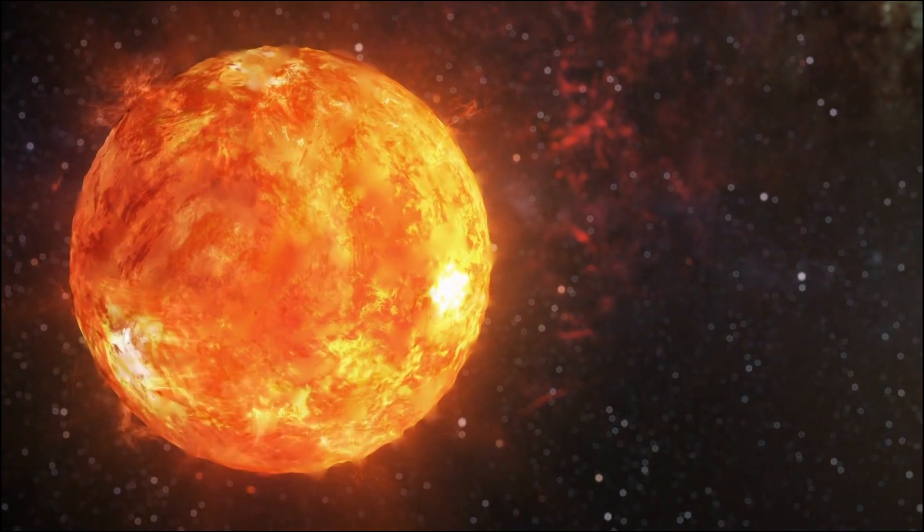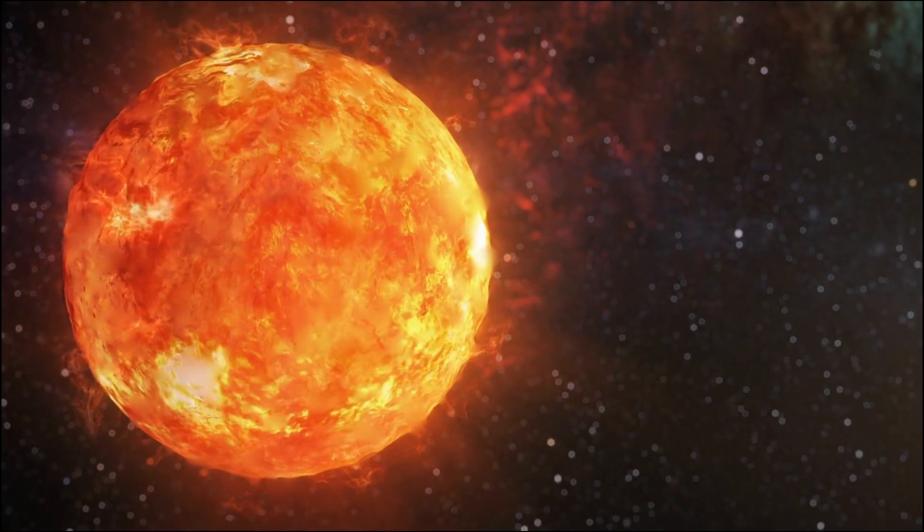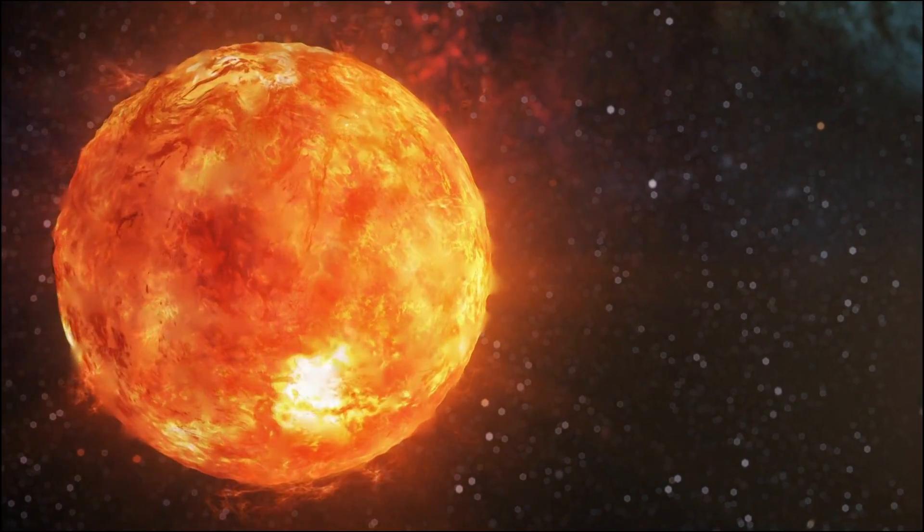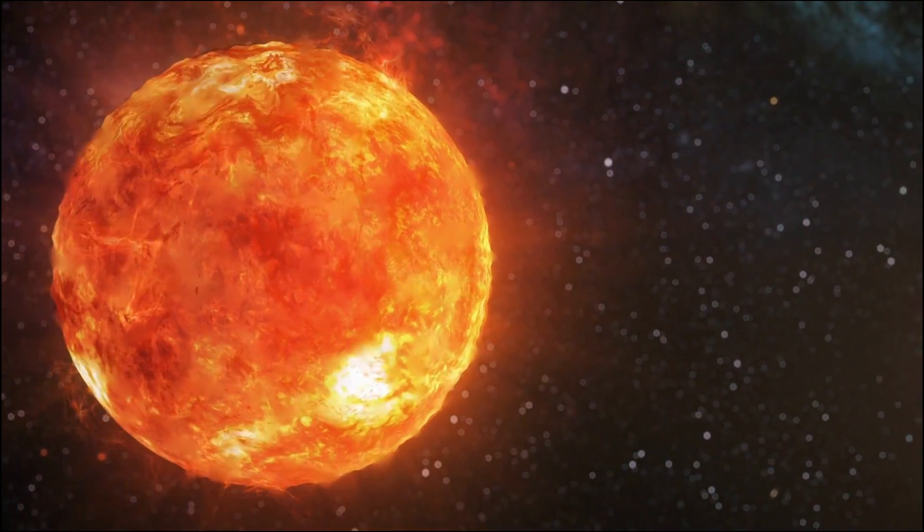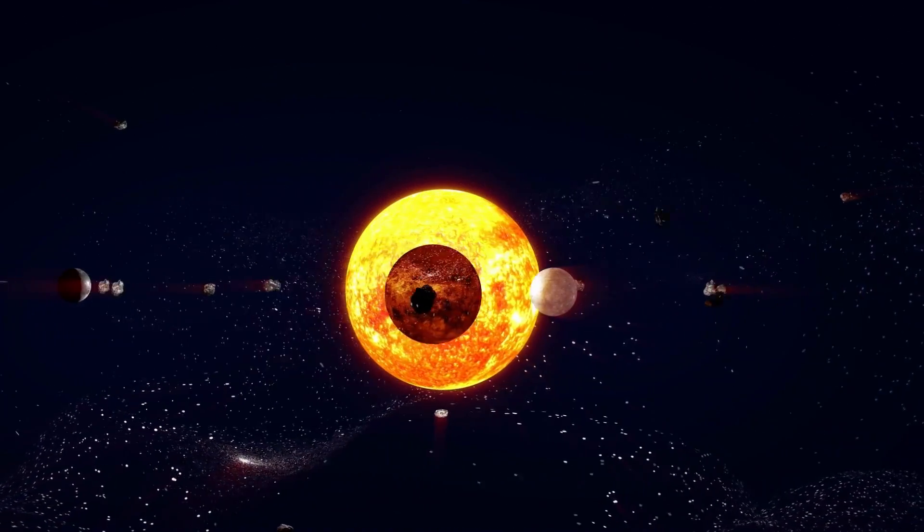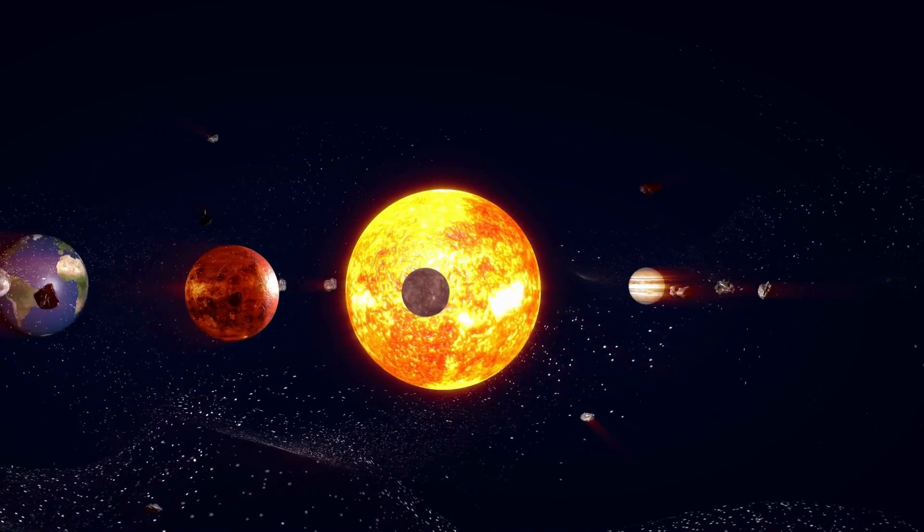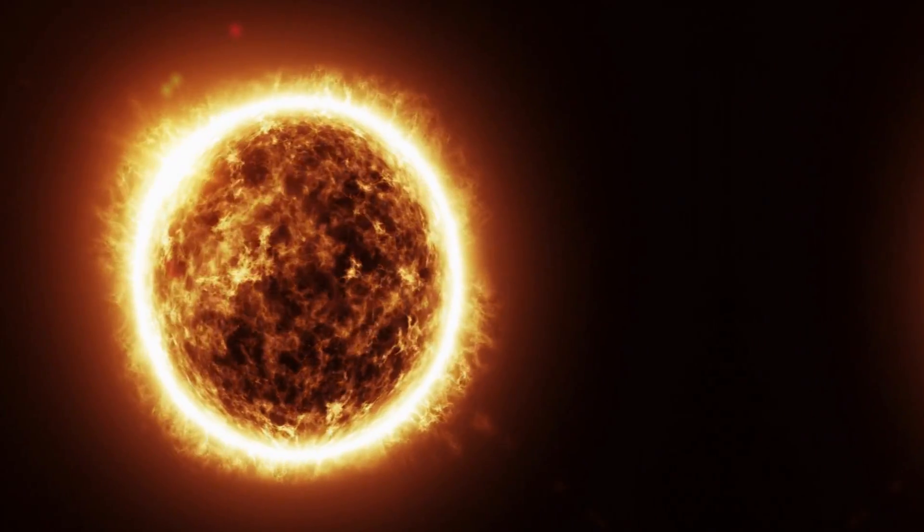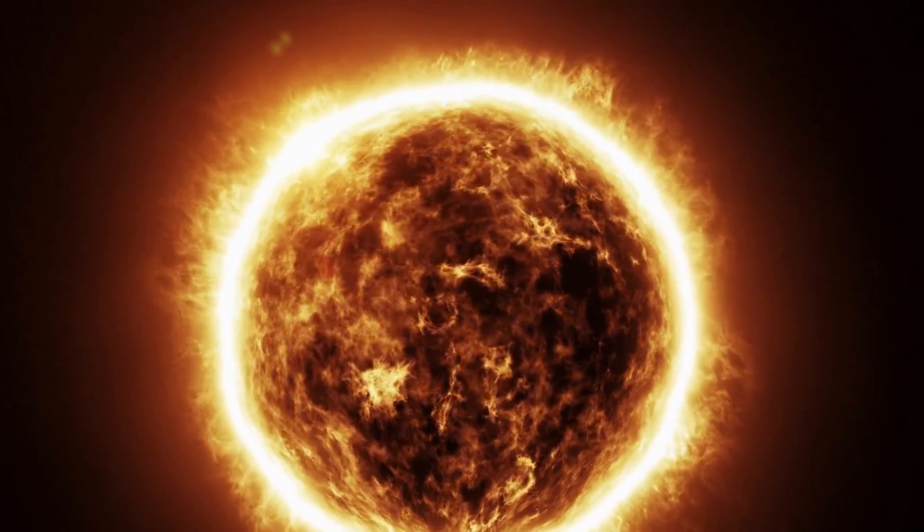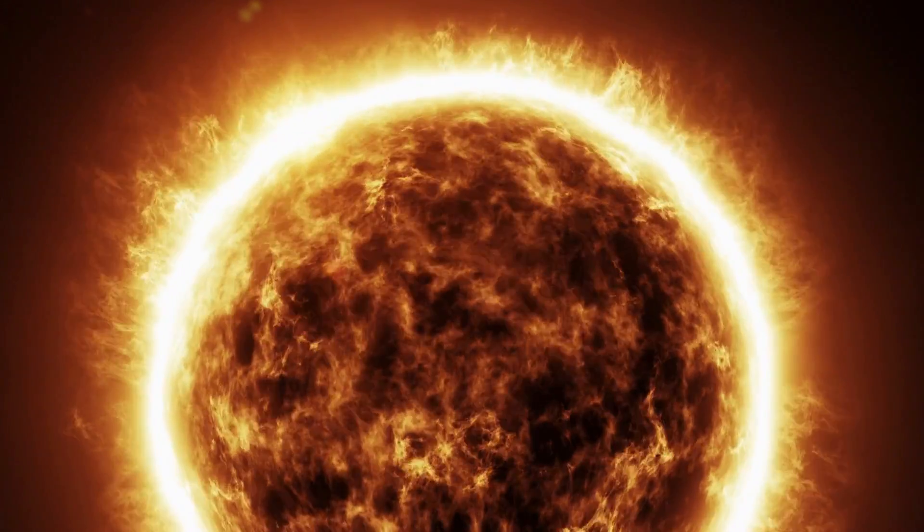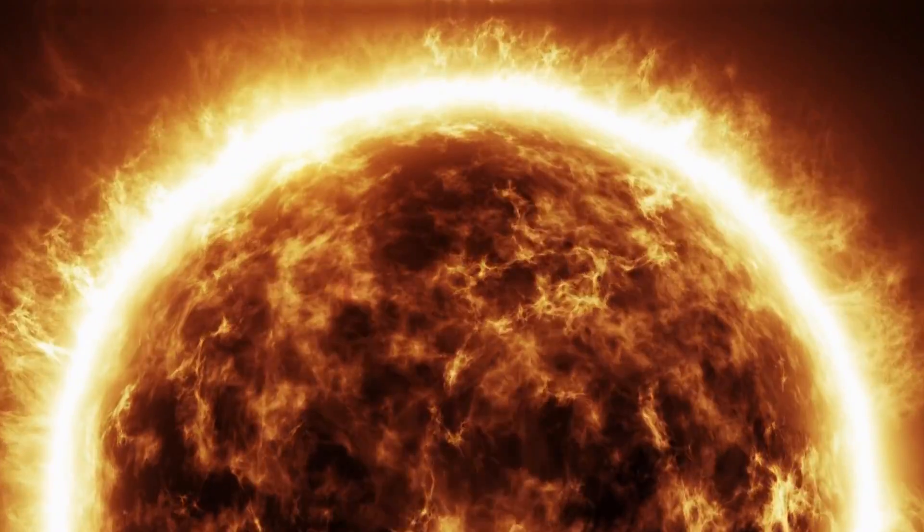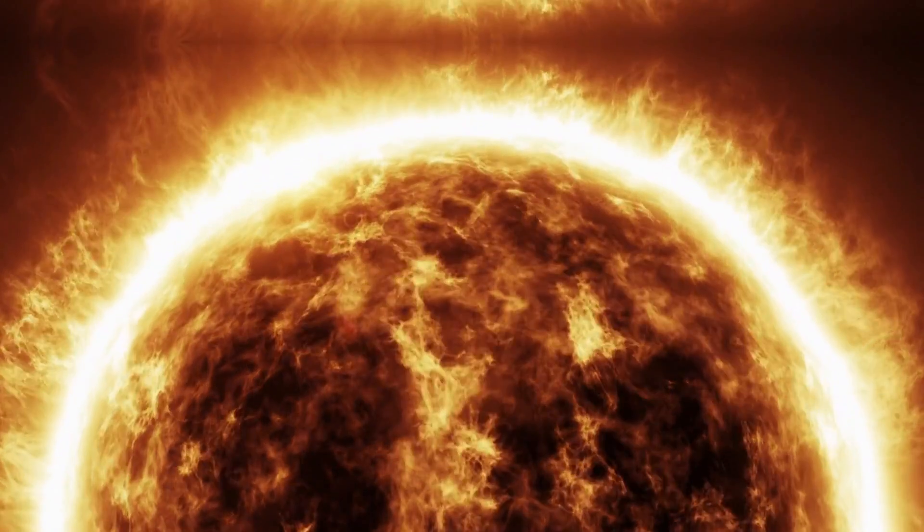Betelgeuse, a colossal red supergiant, defies the norm in more ways than one. Its lifespan has been lived fast and furious compared to our sun's stately existence. In a mere 10 million years, it has evolved into its current state, carrying the weight of its colossal mass. Yet its fate has already been written: a cataclysmic explosion that could potentially eclipse entire galaxies, a cosmic inevitability shrouded in the mystery of when it will unfold.